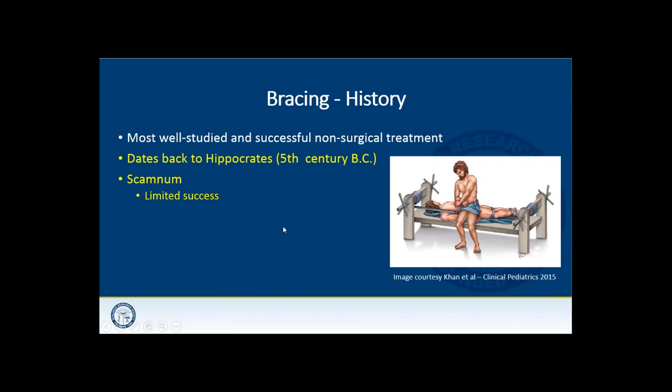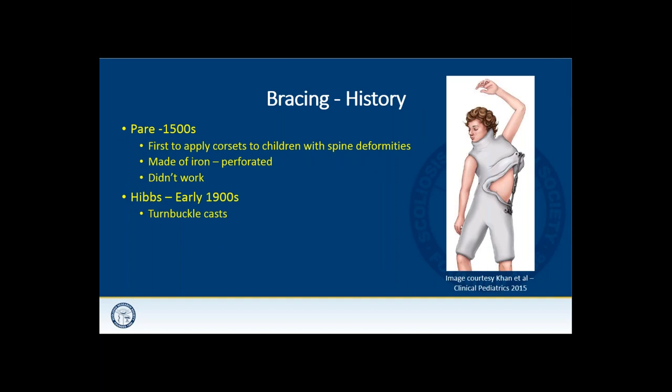Bracing is probably the most well-studied and successful non-surgical treatment for scoliosis, dating all the way back to Hippocrates in the fifth century BC. He came up with a table called a scaminum — you can see a cartoon drawing of a patient strapped to this rack-looking device. As you can imagine, it didn't work very well, but the initial idea for bracing came from this. Moving forward to the 1500s, French physician Paré was the first to apply a corset — made of iron with perforated holes — to children with spine deformities, though that didn't work well either.